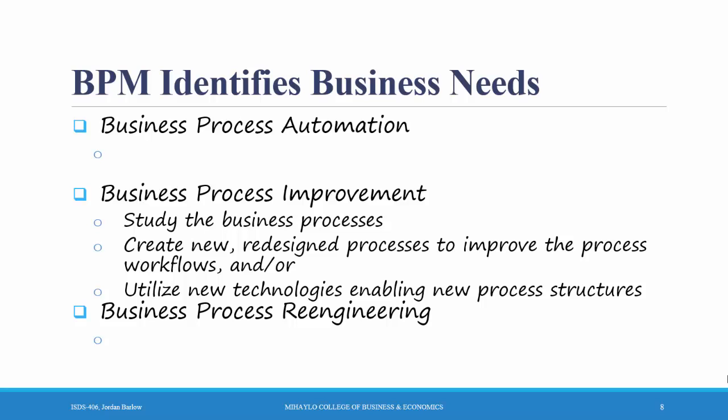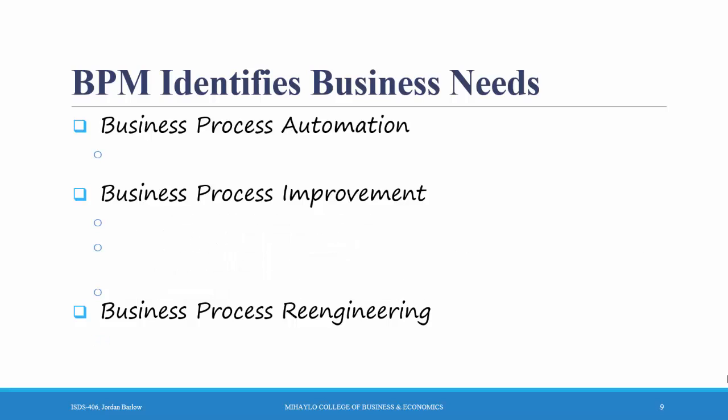The third way to use business process management is business process reengineering. This means doing a total overhaul of work processes. For example, if your organization has customers facing many different departments — calling a help desk for technical issues, a sales rep for sales needs, a marketing rep about a promotion — you might decide to have customers call one central place and store all customer information in one centralized database system. You completely reorganize the way you interact with customers. This is business process reengineering.